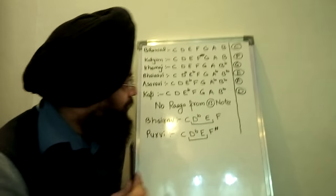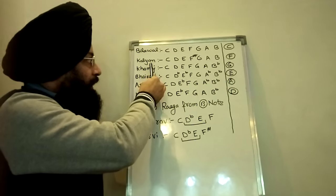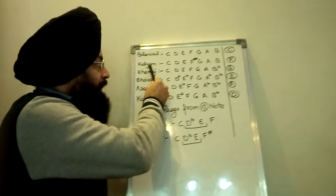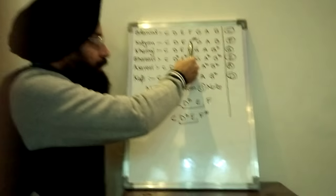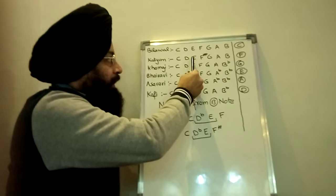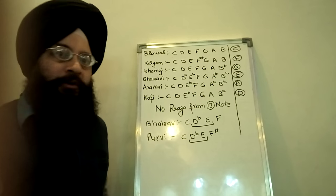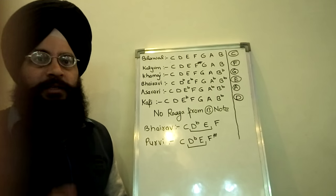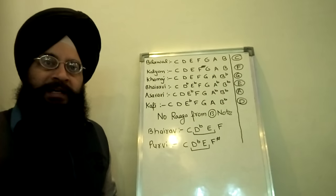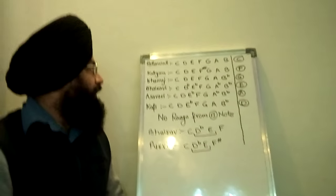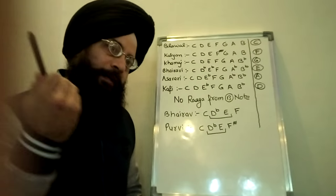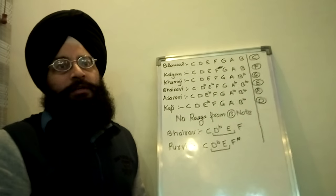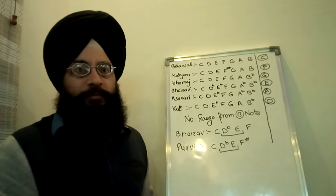Similarly, all the ragas that fall in Kalyan That — in Kalyan That, Ma is the tivra note, and Sa, Re, Ga and all the other notes are shuddha svars. So all the songs based upon Kalyan That, if you start them from F note, then you can play without any slider movement.